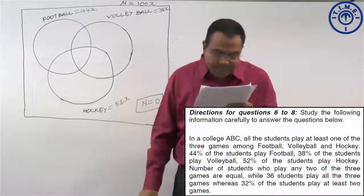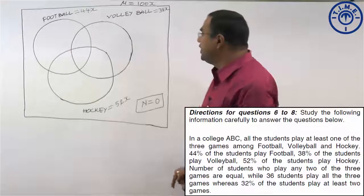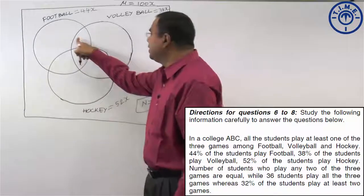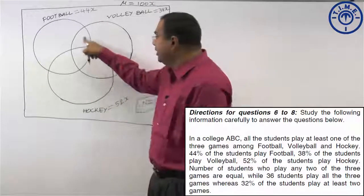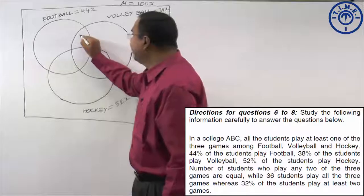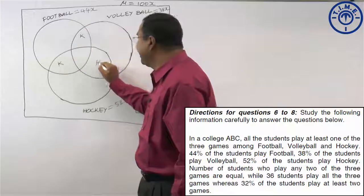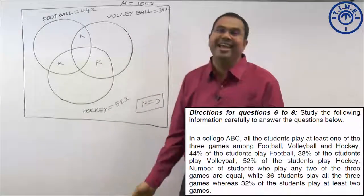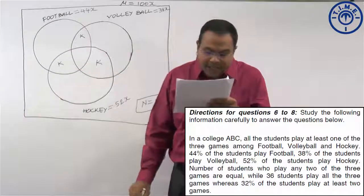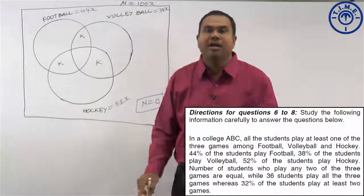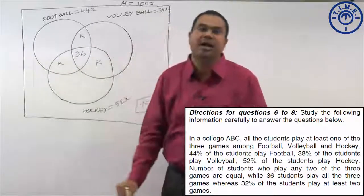The number of students who play any two of the three games are equal — that is students playing only football and volleyball, only football and hockey, and only volleyball and hockey. We do not know the number of students here, so let us take K for each. So this is K, this is K, this is K. Then 36 students play all three games, so the center portion is 36.